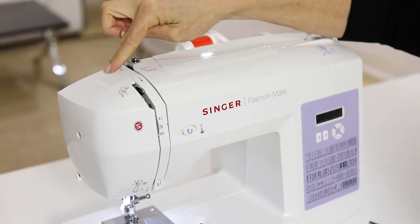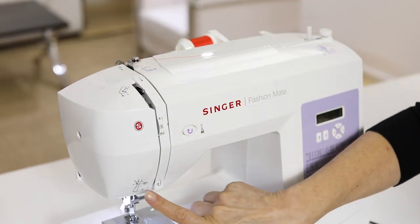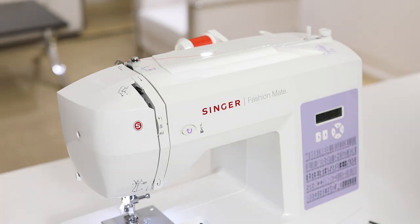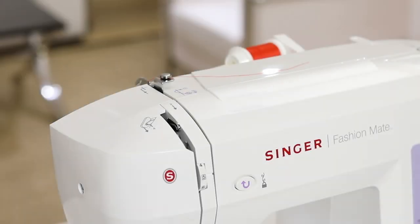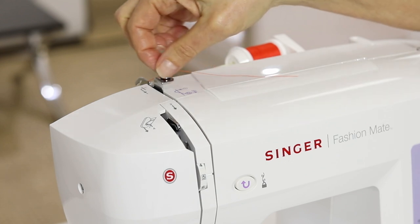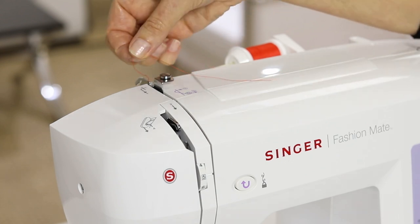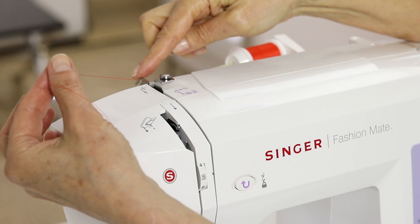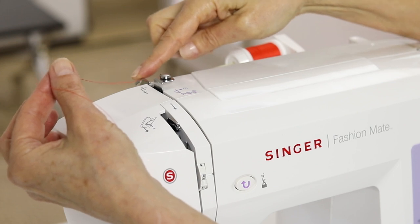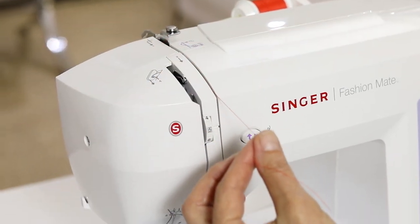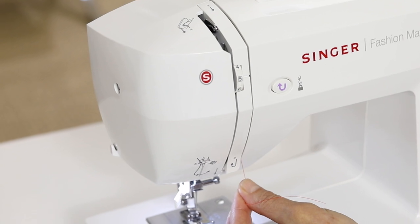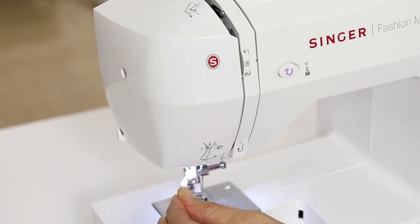There are thread guides in grey that we're going to follow for threading the needle. If you just finished winding a bobbin, the top of your machine probably looks like this. We're going to take this thread out from the bobbin winding tension disc but it's already in thread guide one so we'll leave it there.